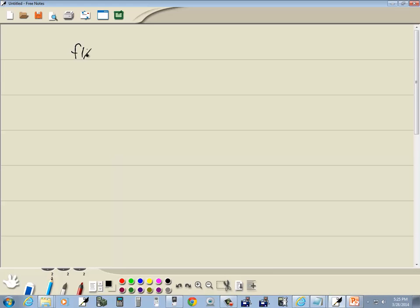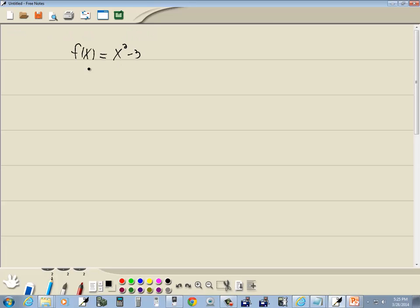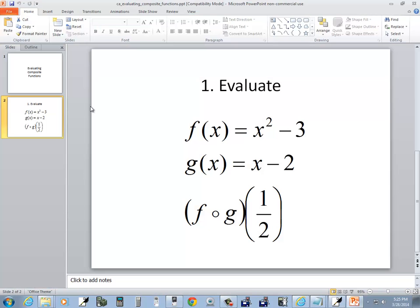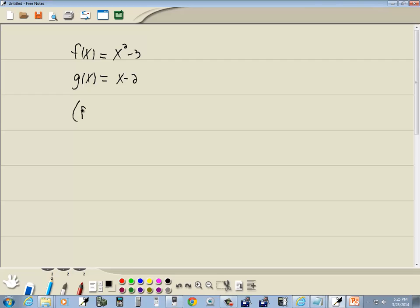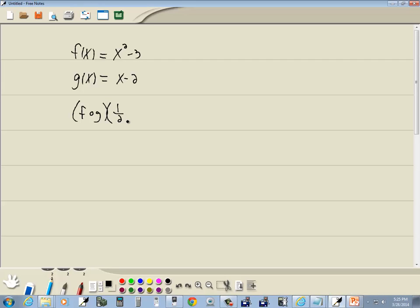f(x) is equal to x squared minus 3, and g(x) is equal to x minus 2. We want to find the composition of f and g, and then we're going to plug in one half for x.